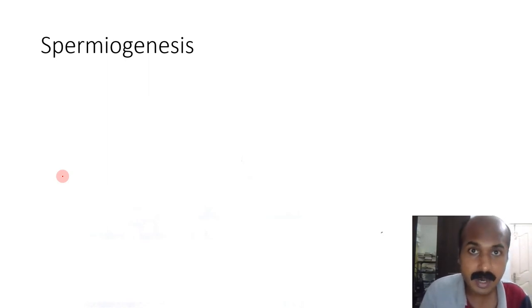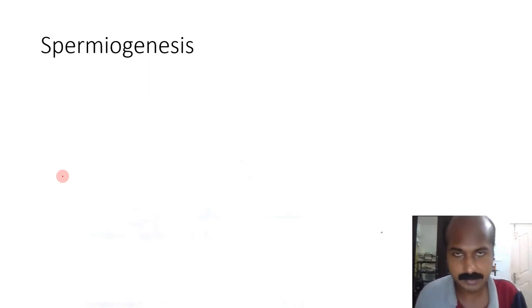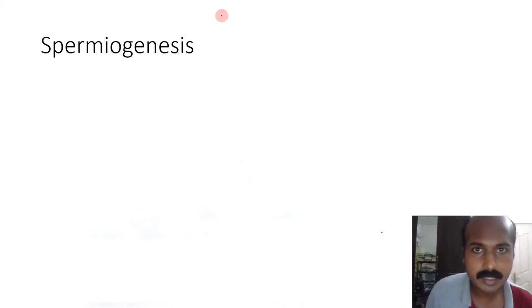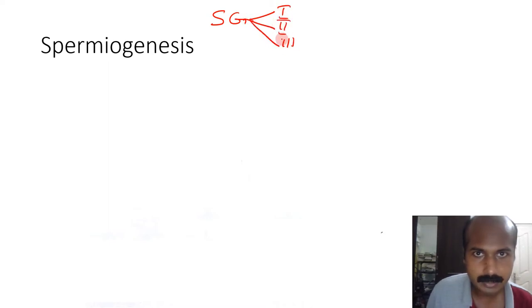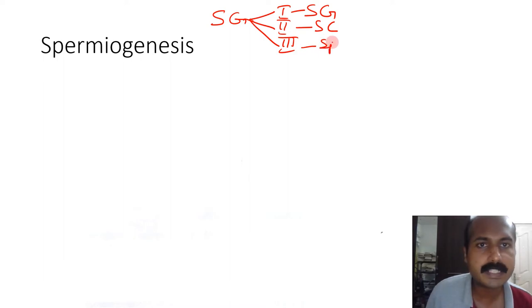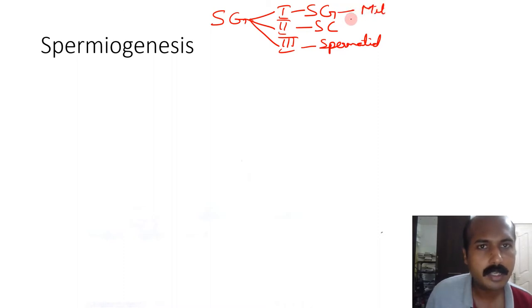In this video we are going to learn about spermiogenesis, the last phase of spermatogenesis. In our previous video we mentioned that spermatogenesis contains three phases: the spermatogonial phase, the spermatocyte phase, and the spermatid phase. The spermatogonial phase is basically a mitotic division and the spermatocyte phase is basically a meiotic division.